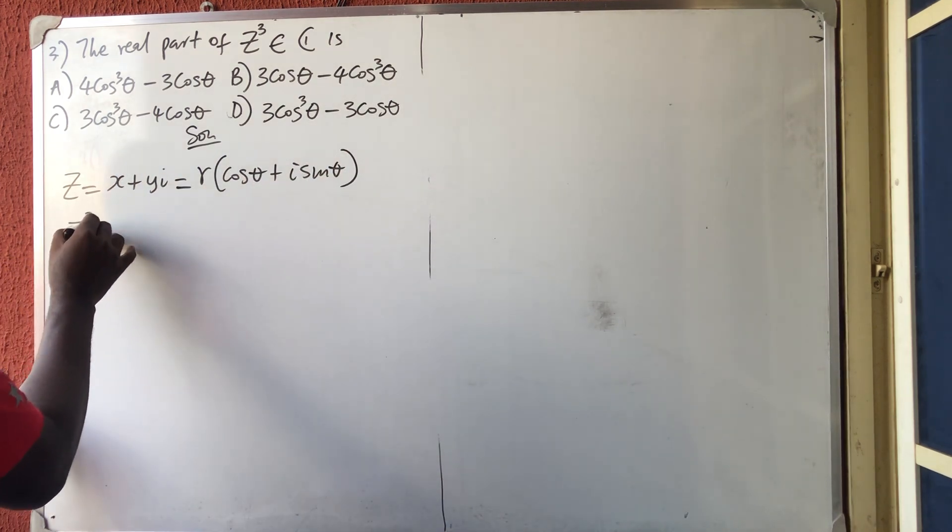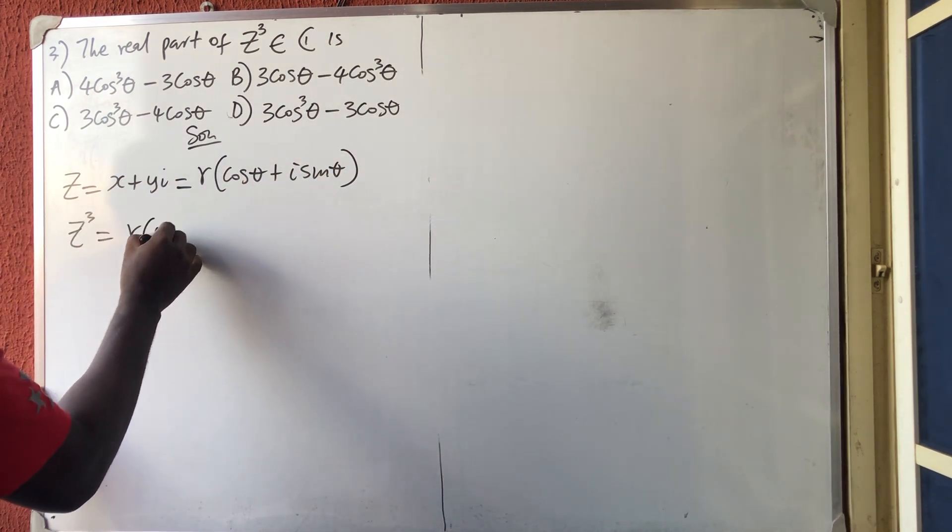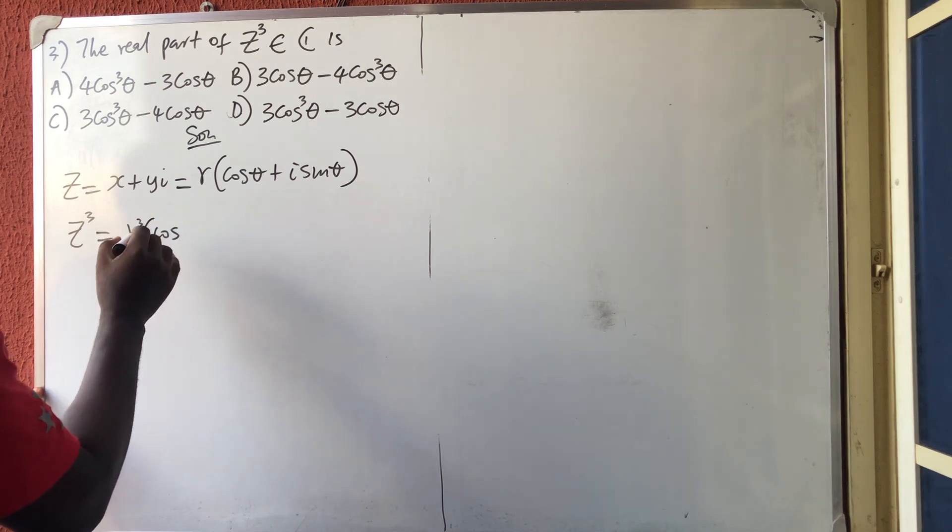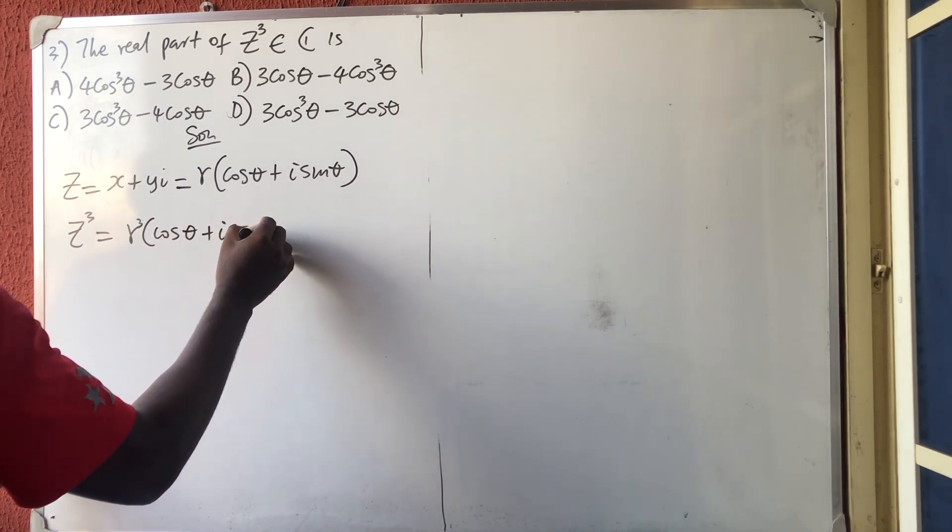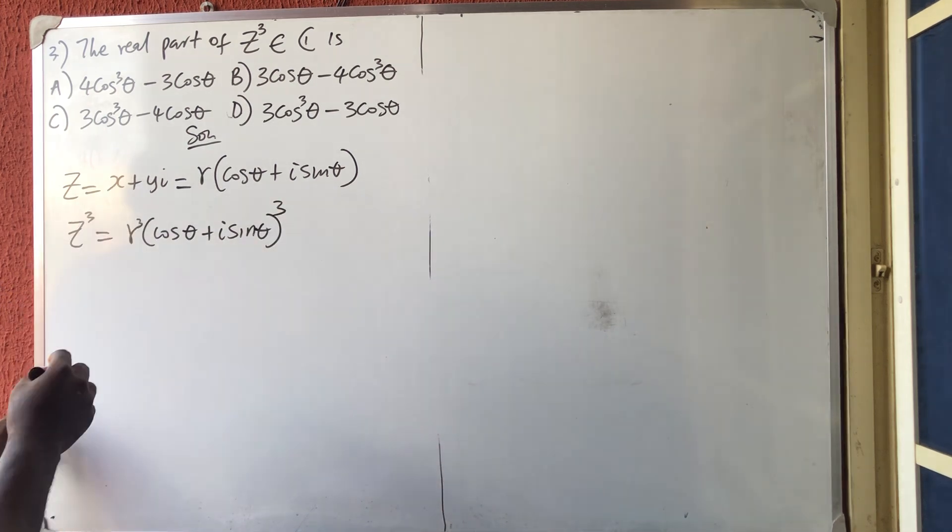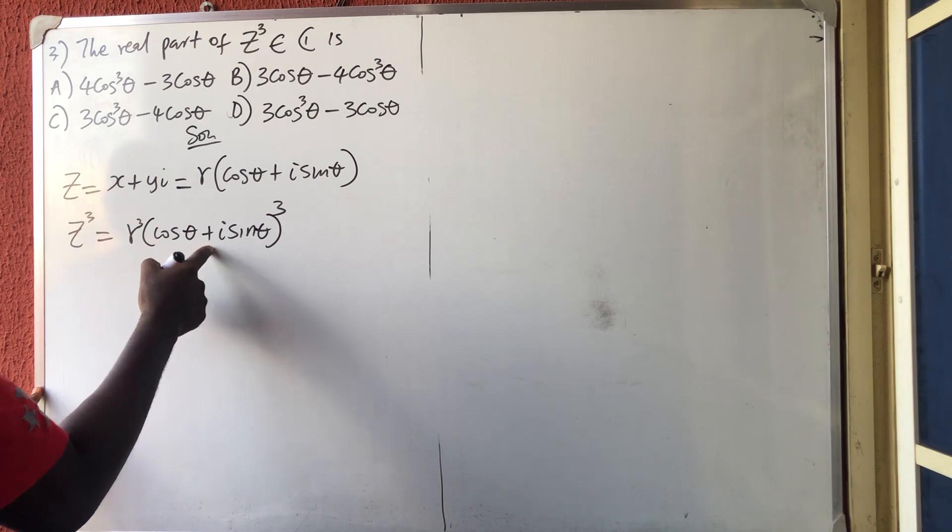Therefore, Z raised to the power 3 is R raised to the power 3 in bracket of cos theta plus i sine theta, everything raised to the power 3. If we expand this...